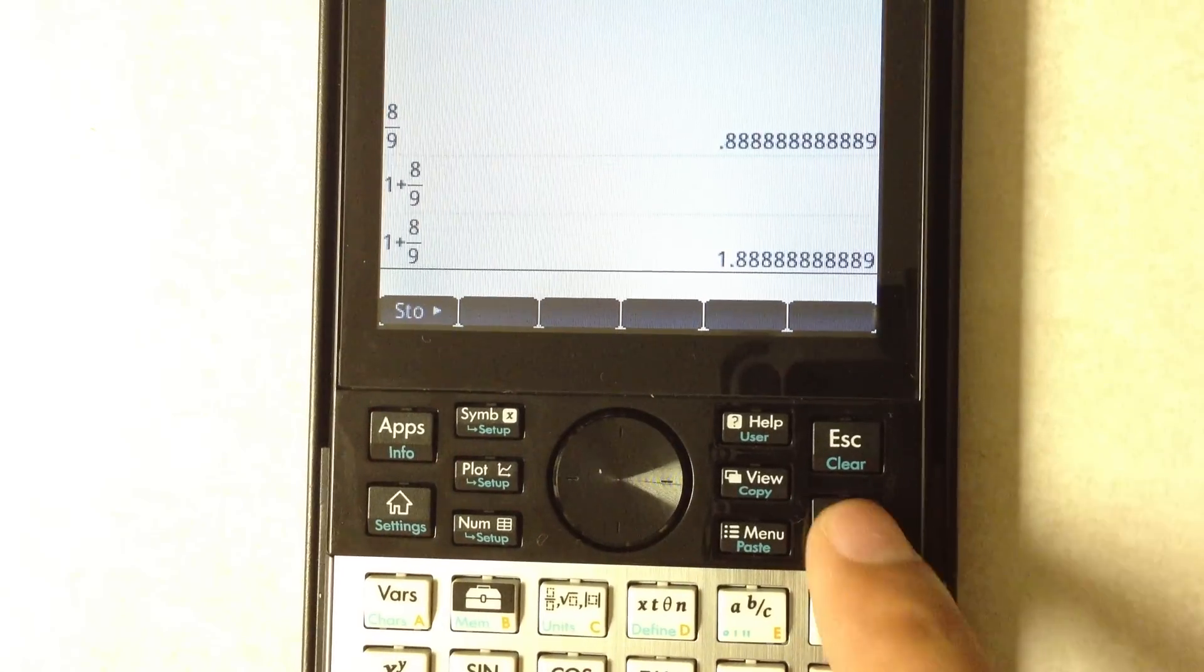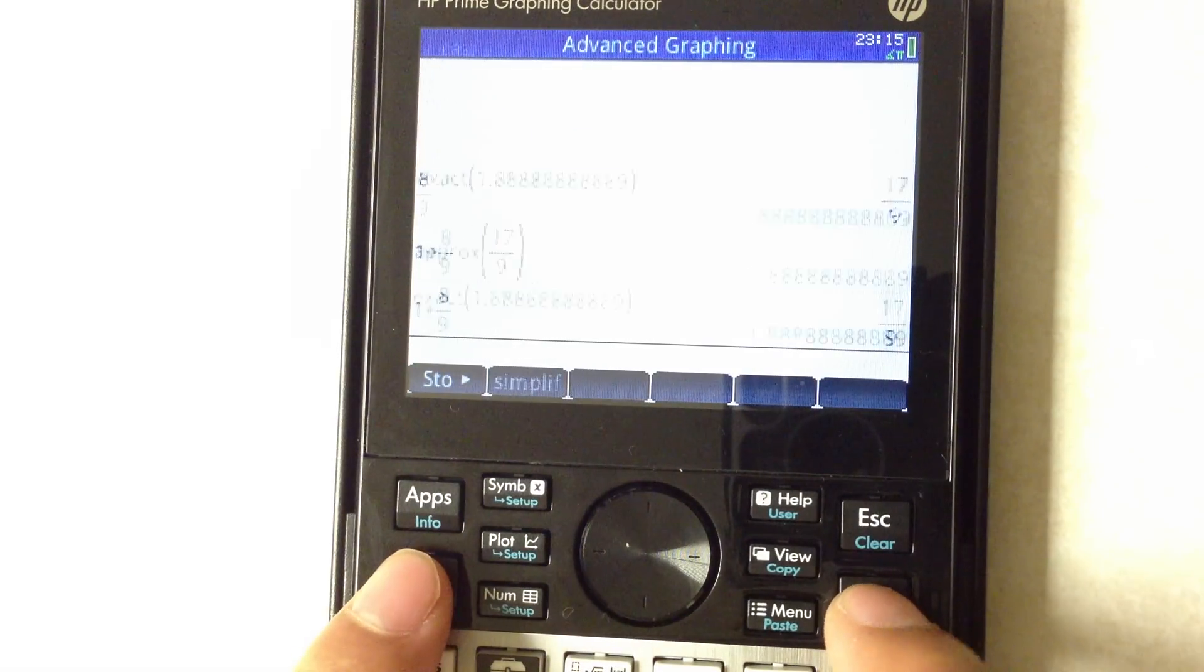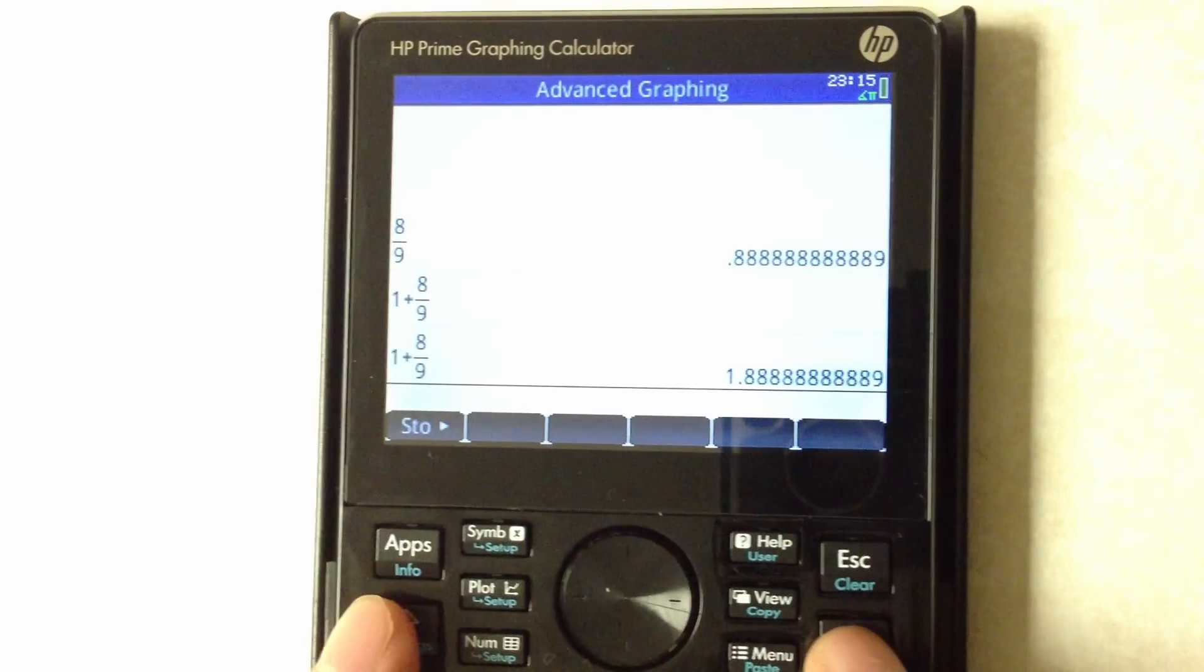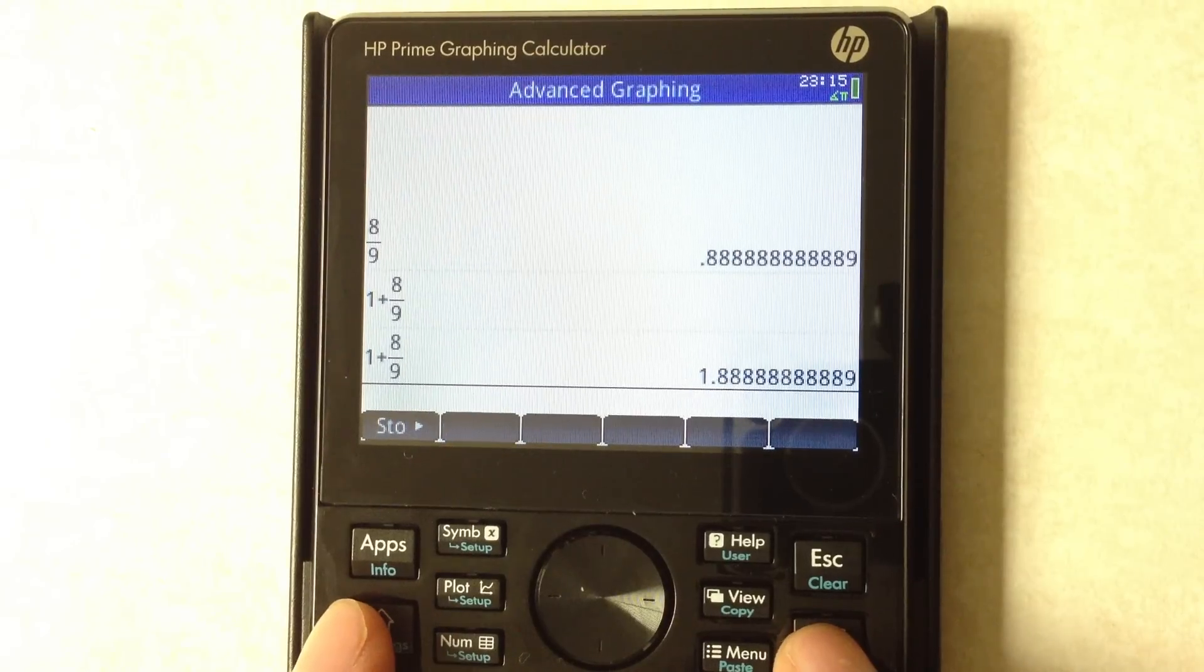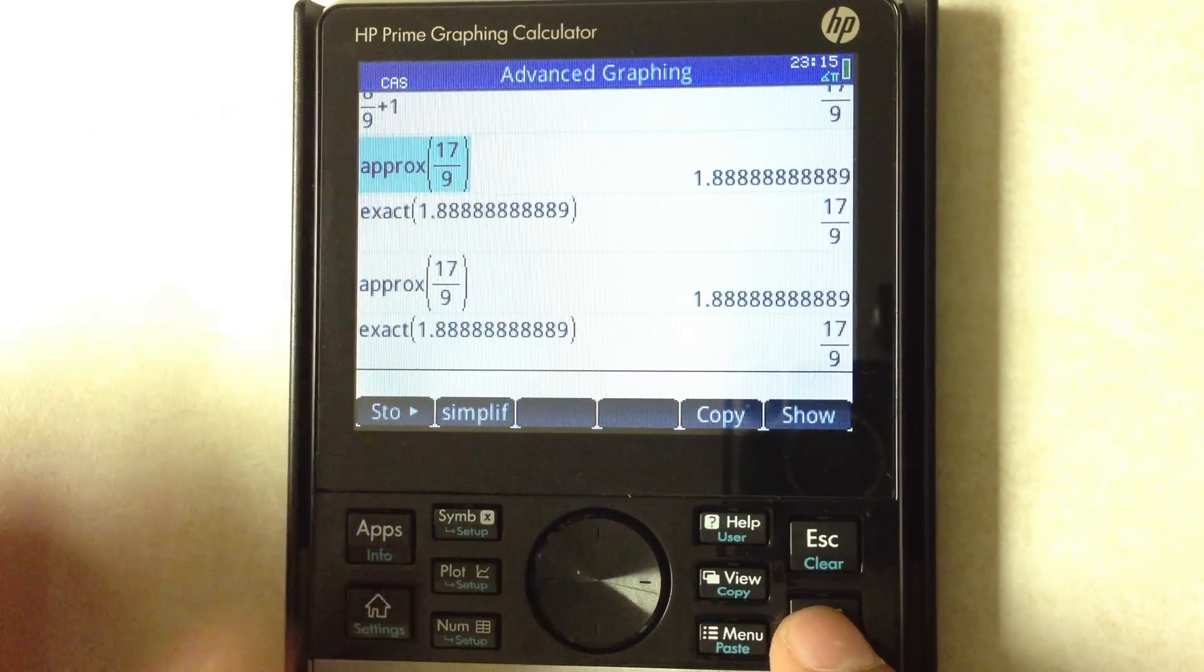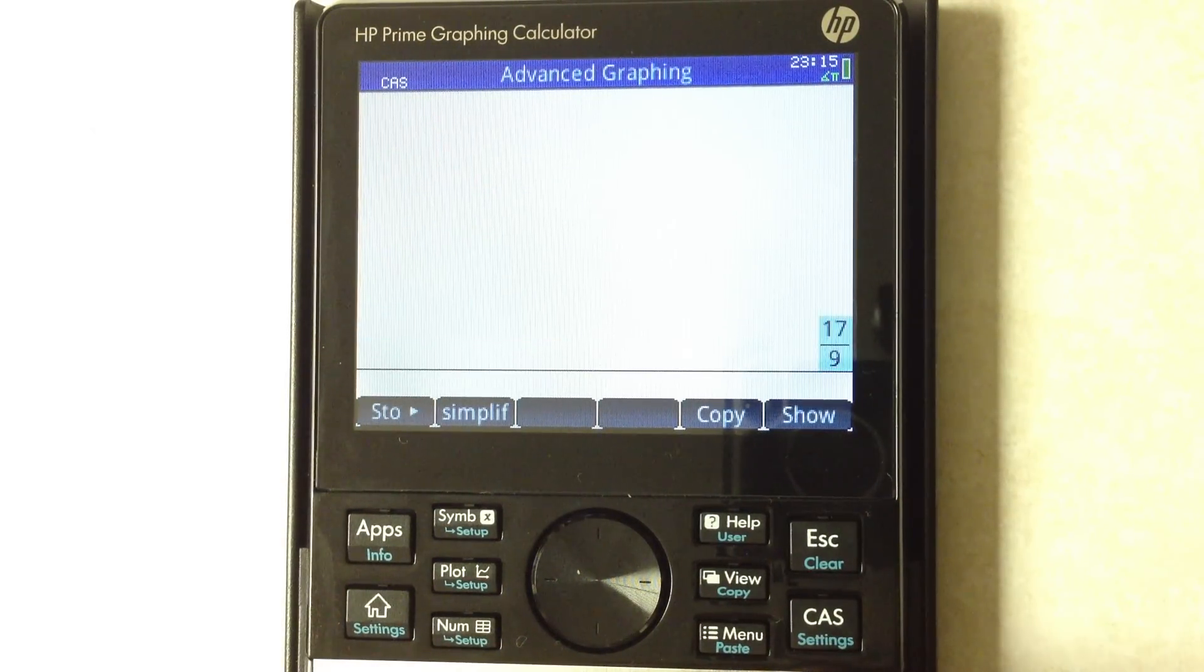In the computer algebra system screen, think of it as two separate environments - one where you do approximations so everything is computed out as a decimal, and then the other screen, the CAS mode here, where things are done in an exact format unless you specify that you want an approximation.